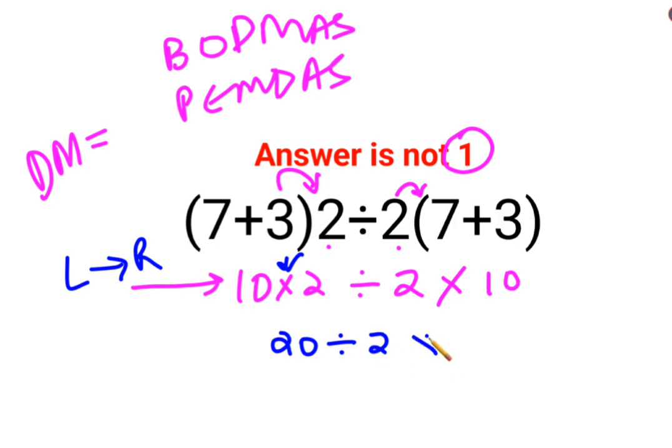So 20 divided by 2 multiplied by 10. The first operation from your left hand side is 20 divided by 2, which is 10 multiplied by 10. So the answer for this question is supposed to be 100.